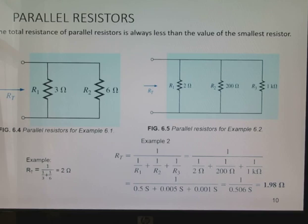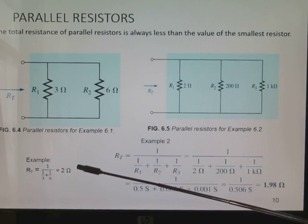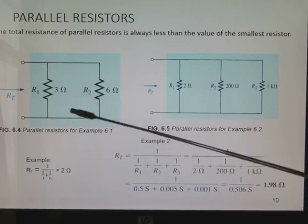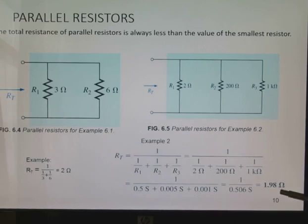One thing to take note is when you have something in parallel, resistors in parallel, the total value will always be less than the smallest value. So 2 is less than 3. Total value here is 1.98. It's less than 2.